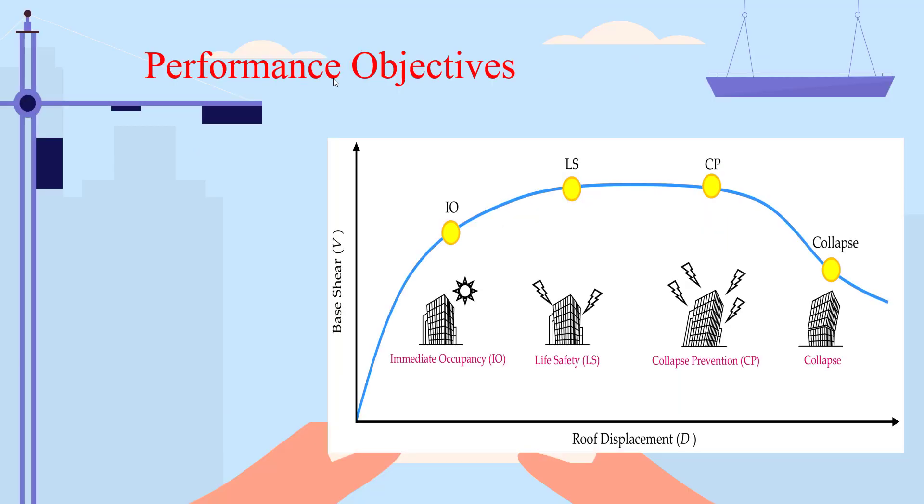Here are some tips for beginners. For example, if you choose the life safety performance level and after analysis you find that the performance level is immediate occupancy, that means your cross-sectional areas are too large.